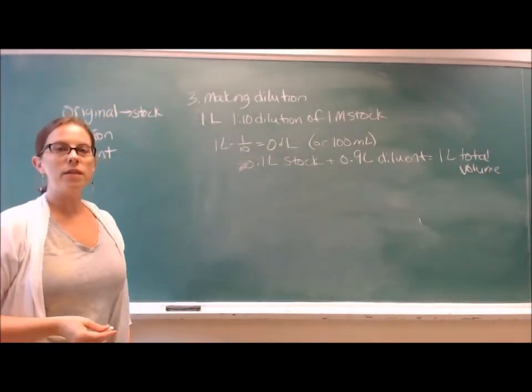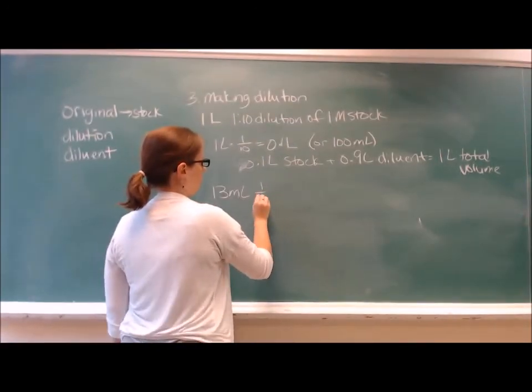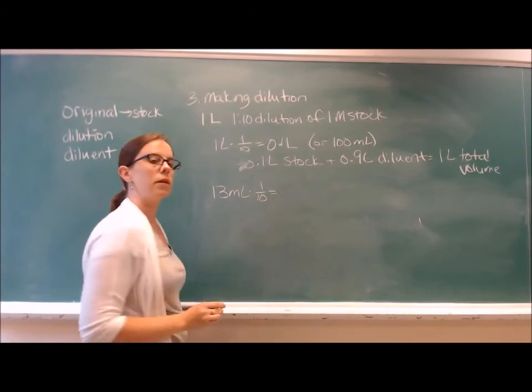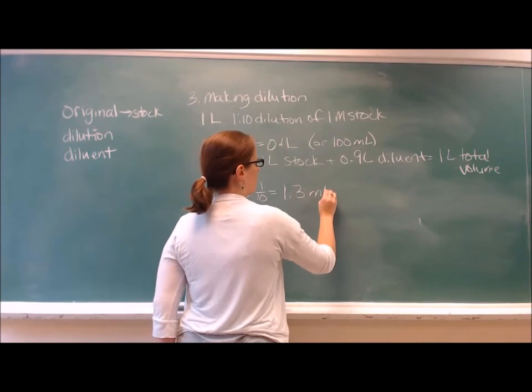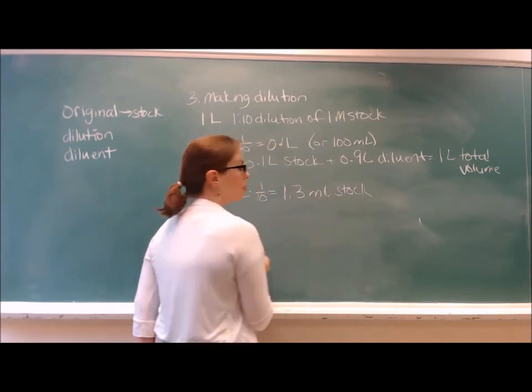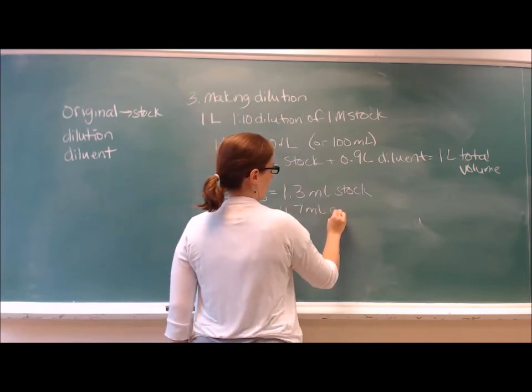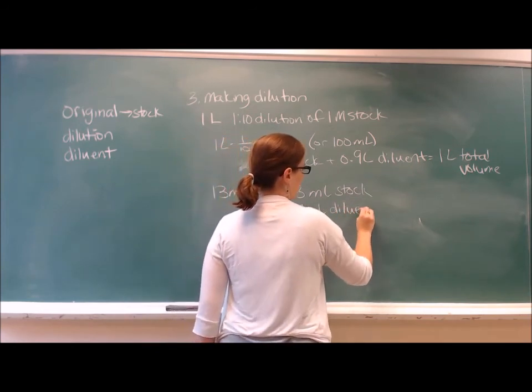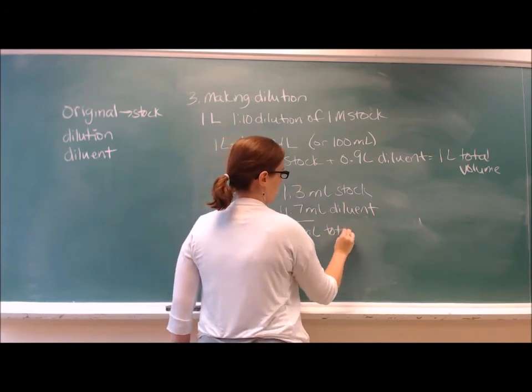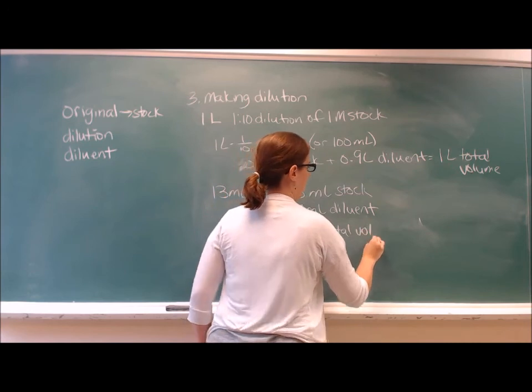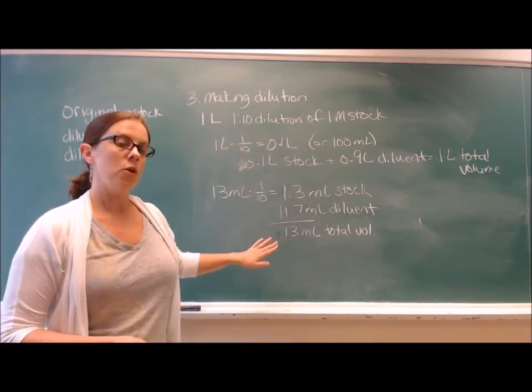What if we wanted 13 mils of a 1 to 10 dilution? Then we would use 1.3 mils of the stock, plus 11.7 mils of diluent, and that would give us 13 mils total volume. And you can see that 1.3 is 1 tenth of 13 mils.